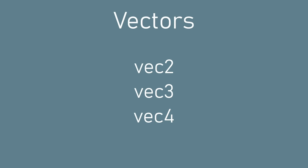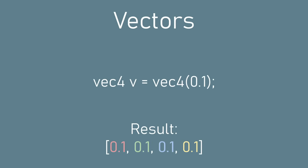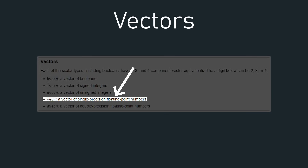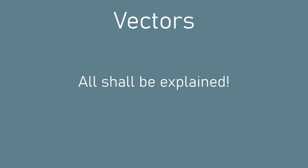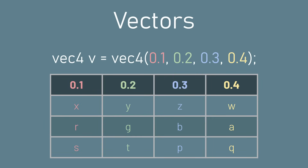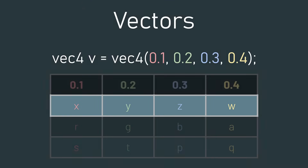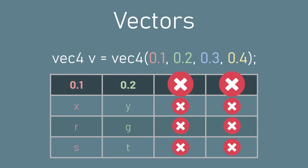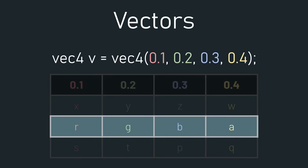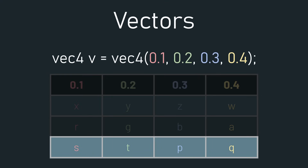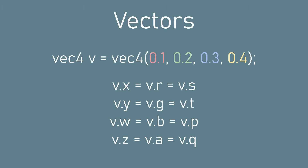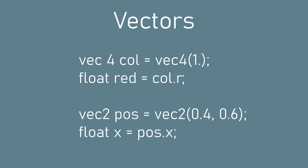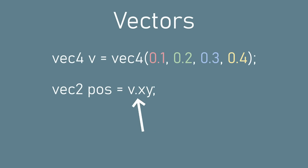Another very common data type we'll use a lot in this video is vectors, which can have two, three or four components and can be initialized with either an individual value for each component or with a single value that will be set to all the components. You can reference the components of a vector in multiple ways. If the vector is representing position you can use x, y, z and w to access the four components respectively. You can access the same four components with r, g, b and a if it's representing a color. You can also access multiple components at the same time which returns a vector of those components — this is called swizzling.